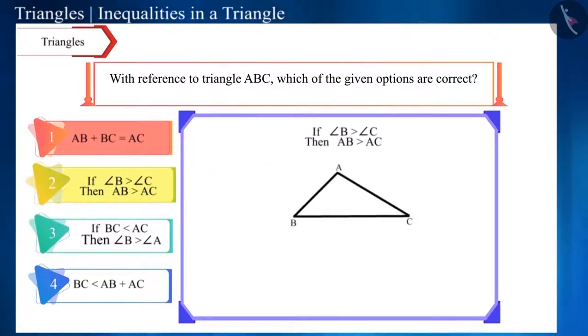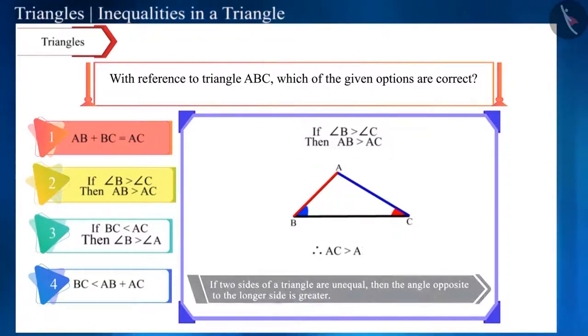According to the second option, angle B is greater than angle C. So, the side opposite to angle B will be greater than the side opposite to angle C. That is, side AC will be greater than side AB. Or, in other words, side AB will be smaller than side AC.